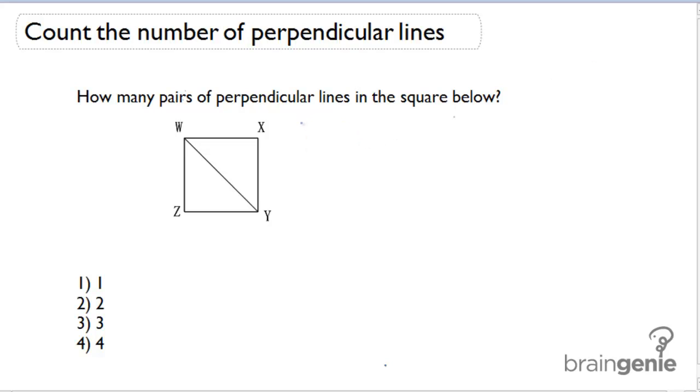We're going to count the number of perpendicular lines in the square below. A square has four right angles. There's a right angle at W, a right angle at X, one at Y, and one at Z.